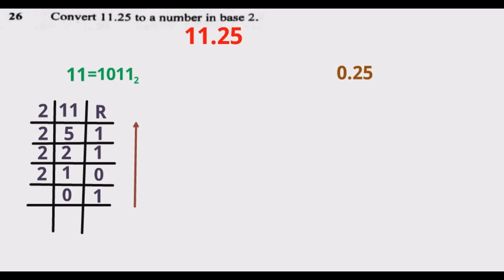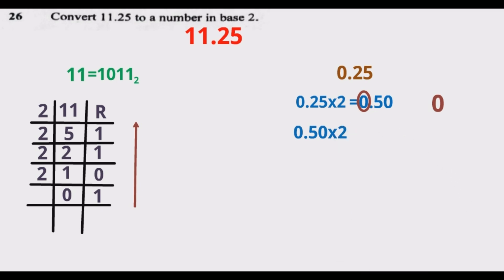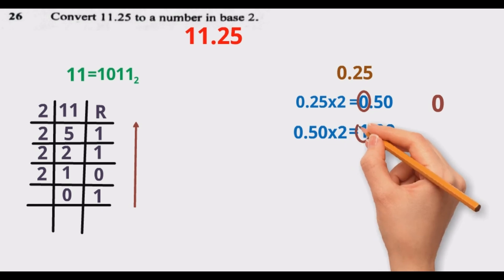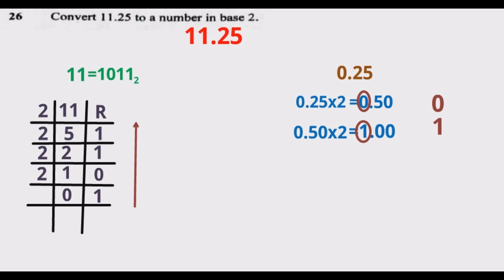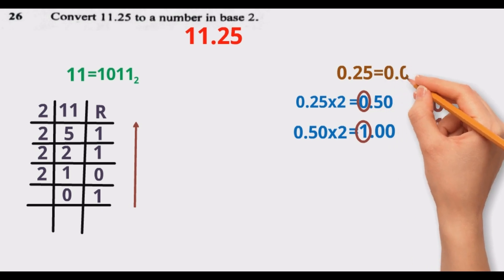Once we've found the value of 11 in base 2, we move to the decimal part, which is 0.25. I'm going to multiply 0.25 times 2, which gives 0.50 — the whole-number part is 0. Then I multiply 0.50 times 2, which gives 1.00 — the whole-number part is 1. So 0.25 in base 2 is 0.01.